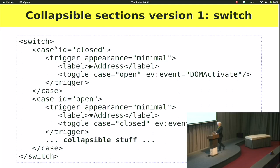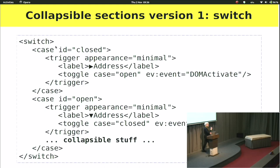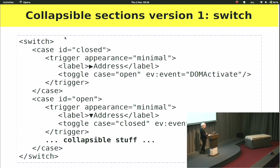The simple case uses a switch with two cases: a closed case and an open case. They both start with a trigger — the thing you click to open or close it. The open case contains the collapsible content. You have two cases, a closed and an open. The trigger in the closed case opens the open case, and the trigger in the open case toggles back to the closed case. Simple and easy.